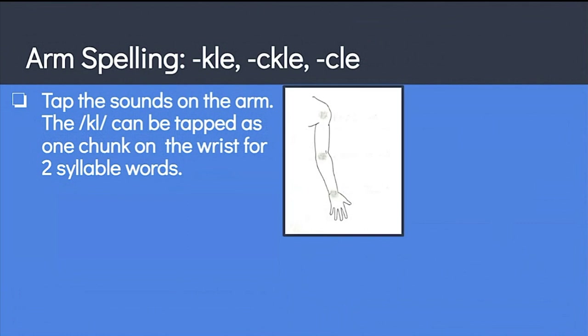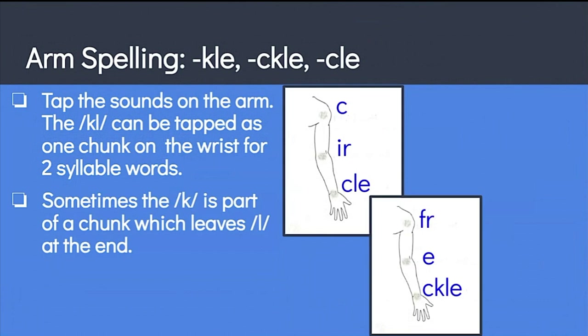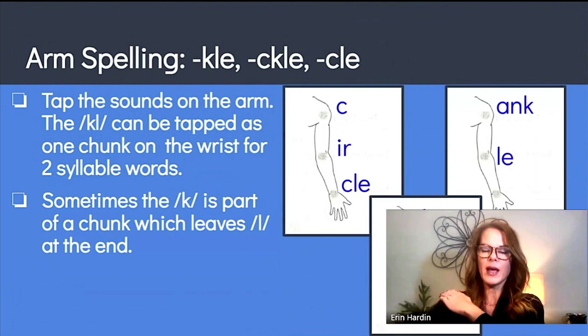So for a circle, the first sound is SS, middle sound, ER, and then we hear CUL at the end that we could put on the wrist, rather than making that a separate syllable. For freckle, we hear FR at the beginning, E in the middle, and then CUL at the wrist. If the K sound is part of a chunk like INK and ANK, we would keep the chunk together, which leaves the UL at the end. So for the word ankle, we're going to keep ANK together on the shoulder, and then follow with the UL sound. ANK, UL, ankle.